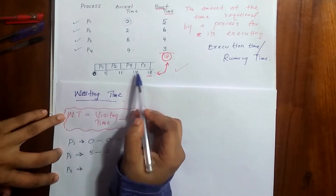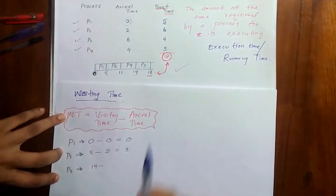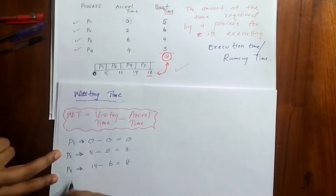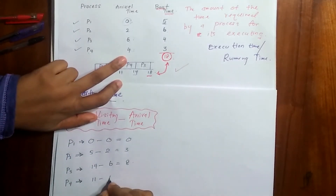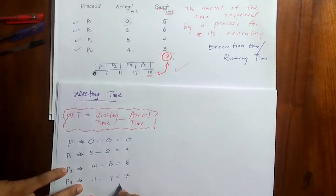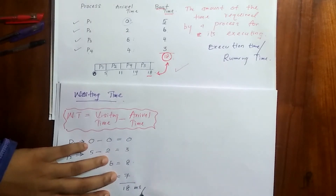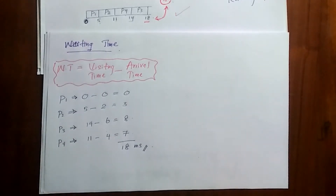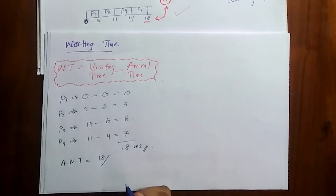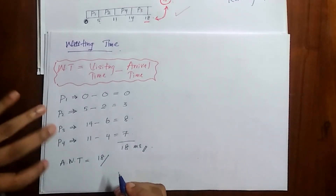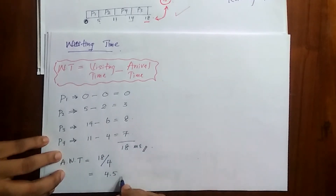P3 visiting time is 14 minus arrival time 6, which gives 8. P4 visiting time is 11 minus 4, which gives 7. The total waiting time is 0 plus 3 plus 8 plus 7, which is 18 milliseconds. Then we find the average waiting time by dividing by the number of processes, 4, giving 4.5 milliseconds.